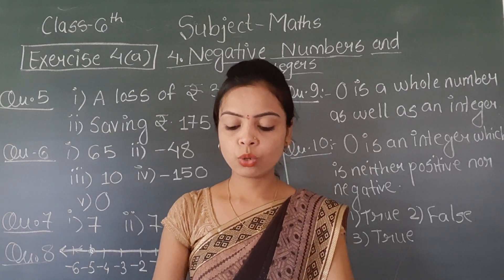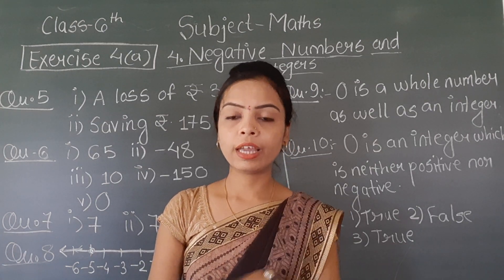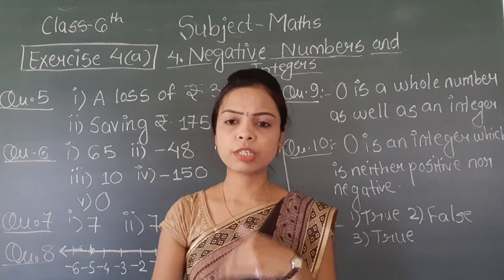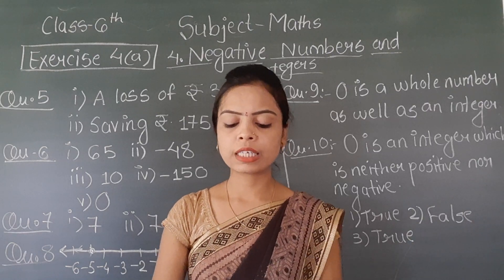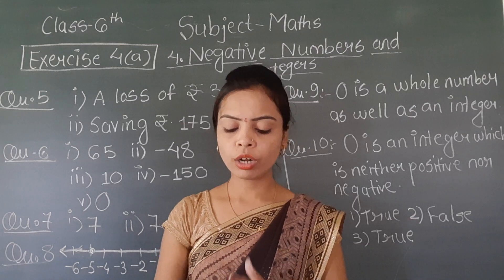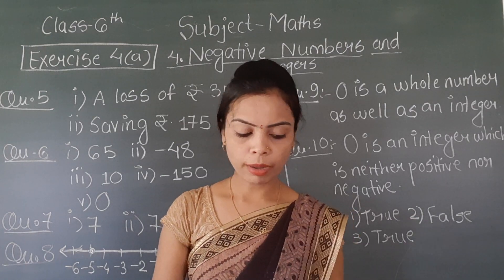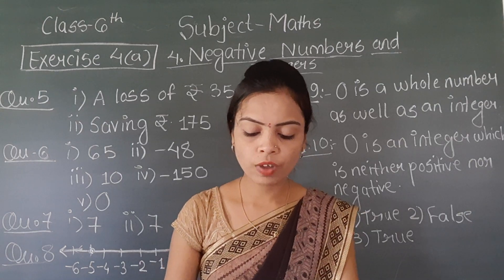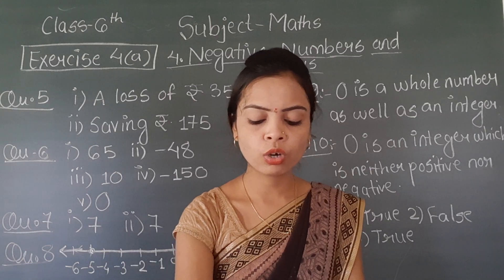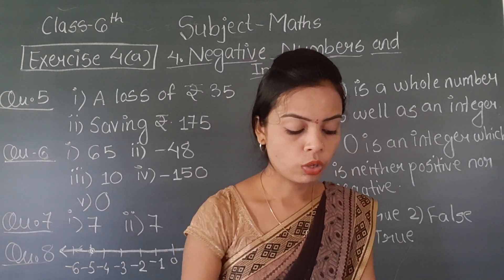For the second number line, on the right of 0 the numbers given are 0, 4, 8 — that means there is a table of 4. So on the left side we follow the same pattern with negative signs: minus 4, minus 8, minus 12, minus 16, minus 20, minus 24, minus 28, minus 32.